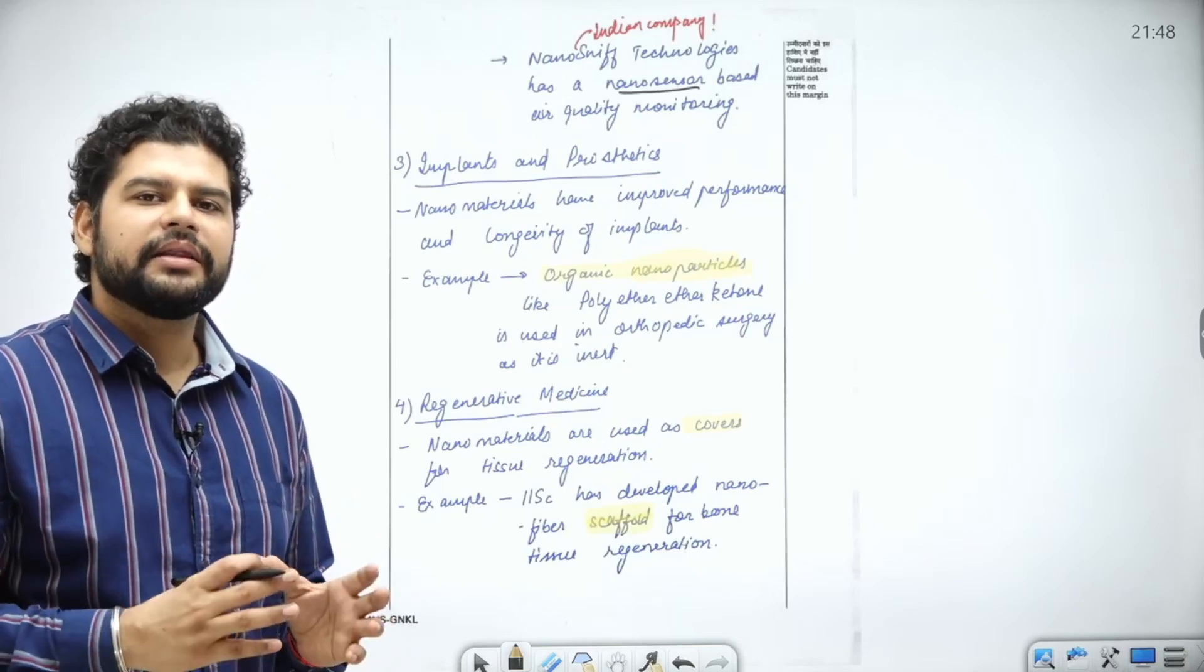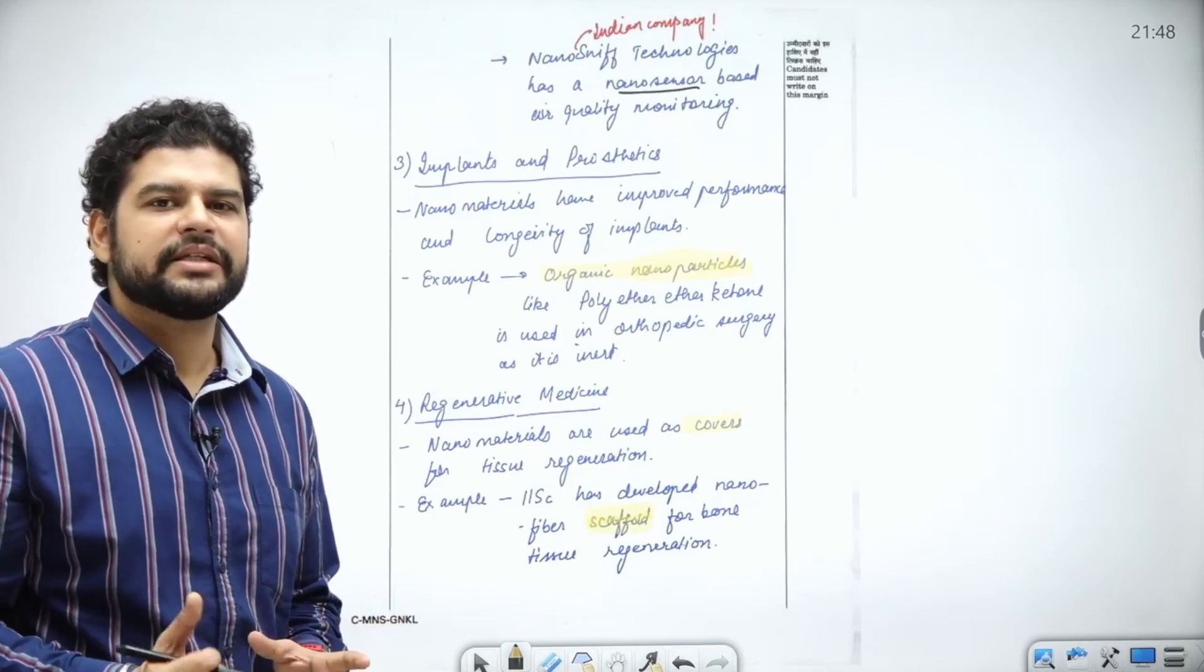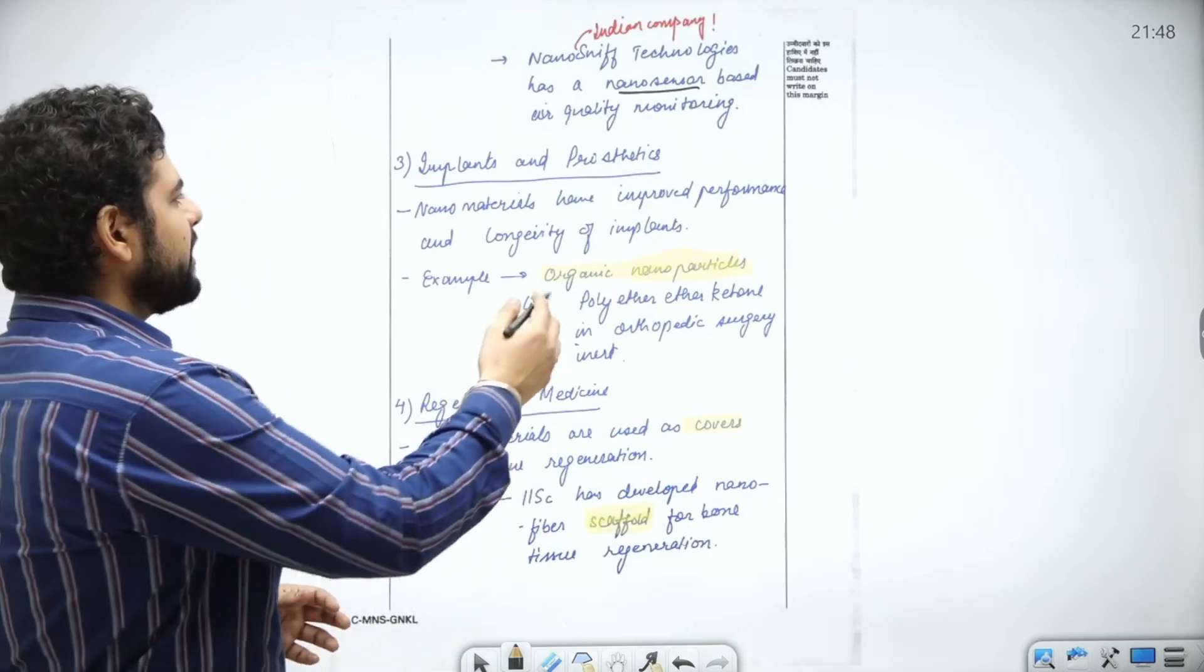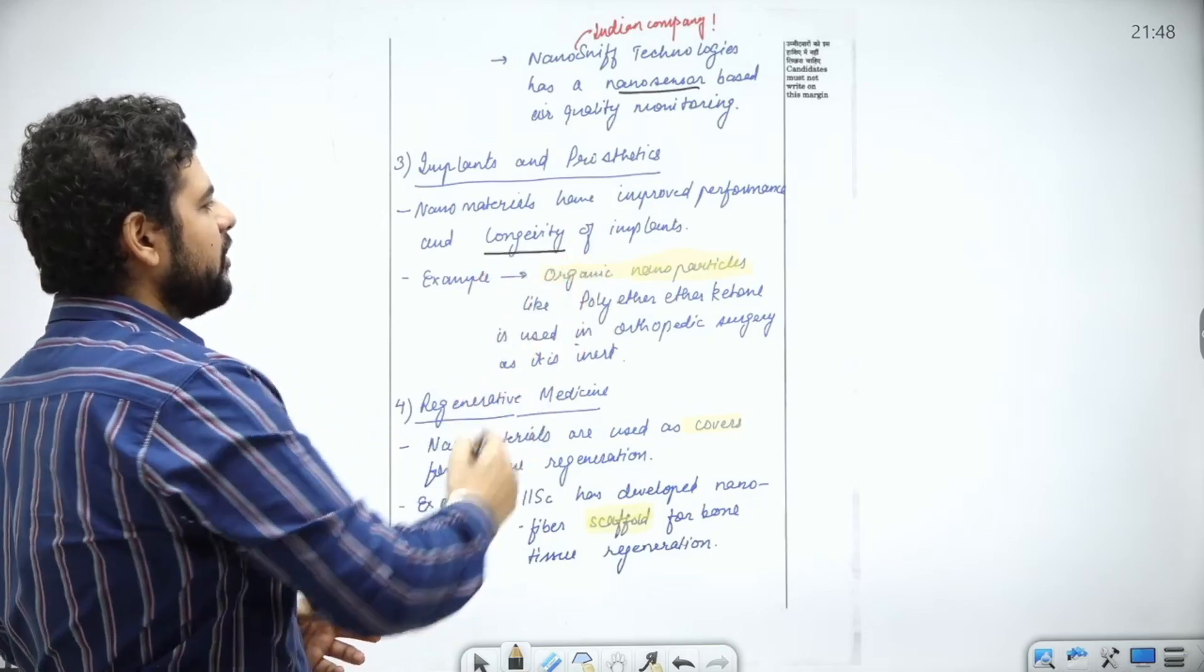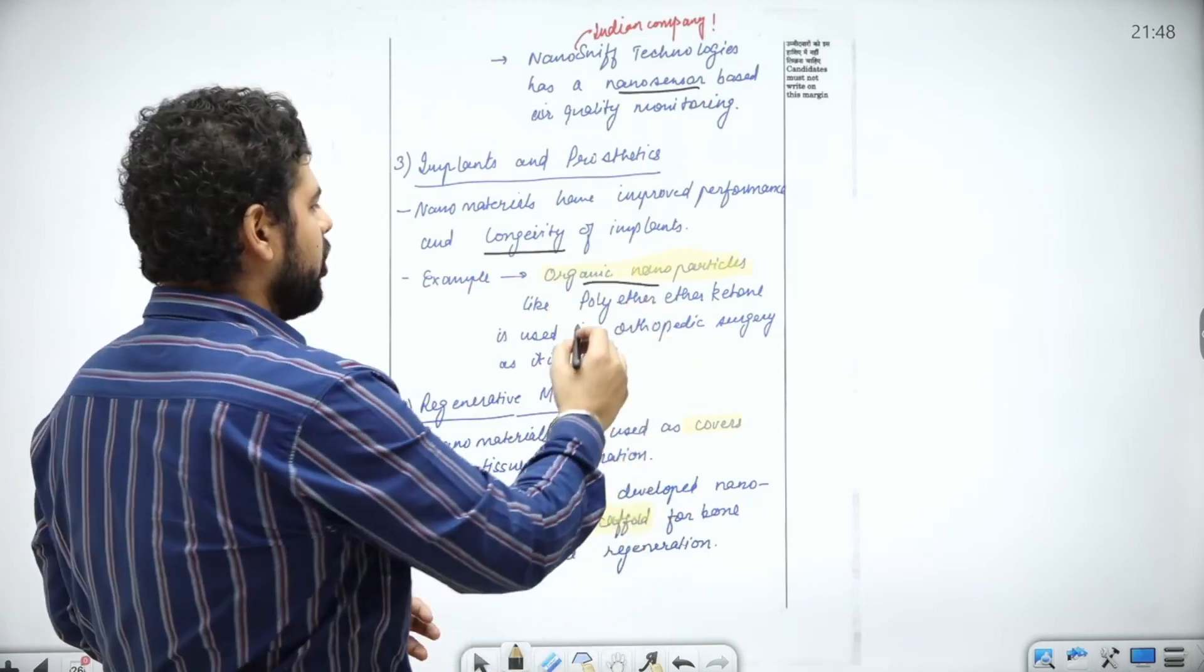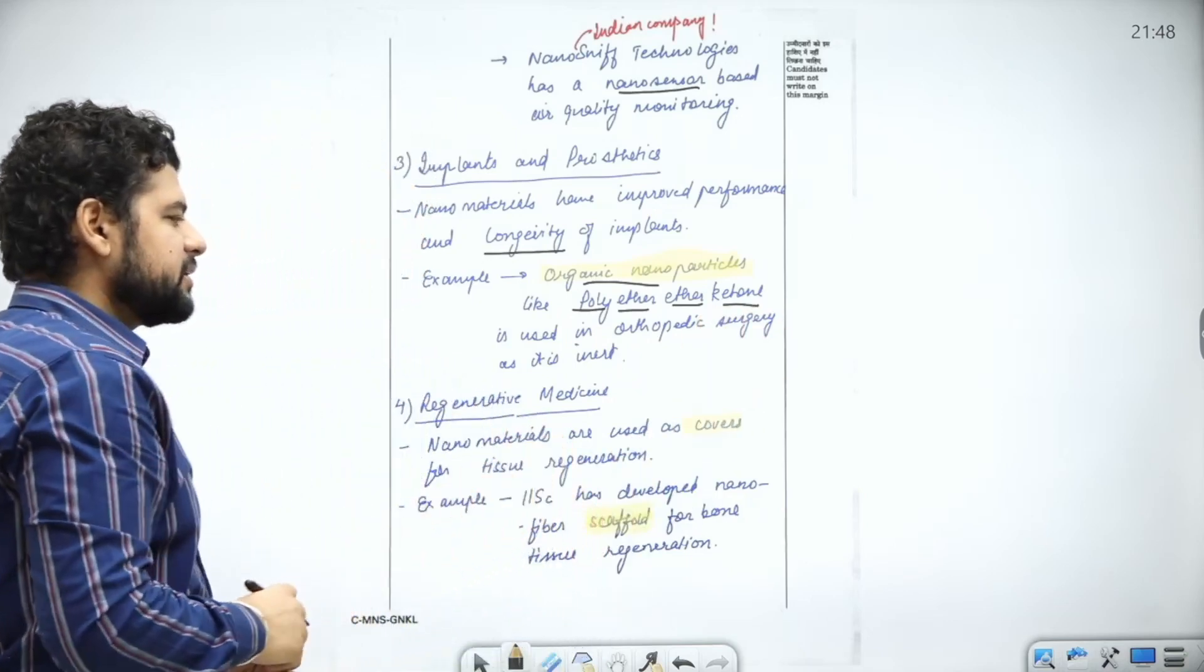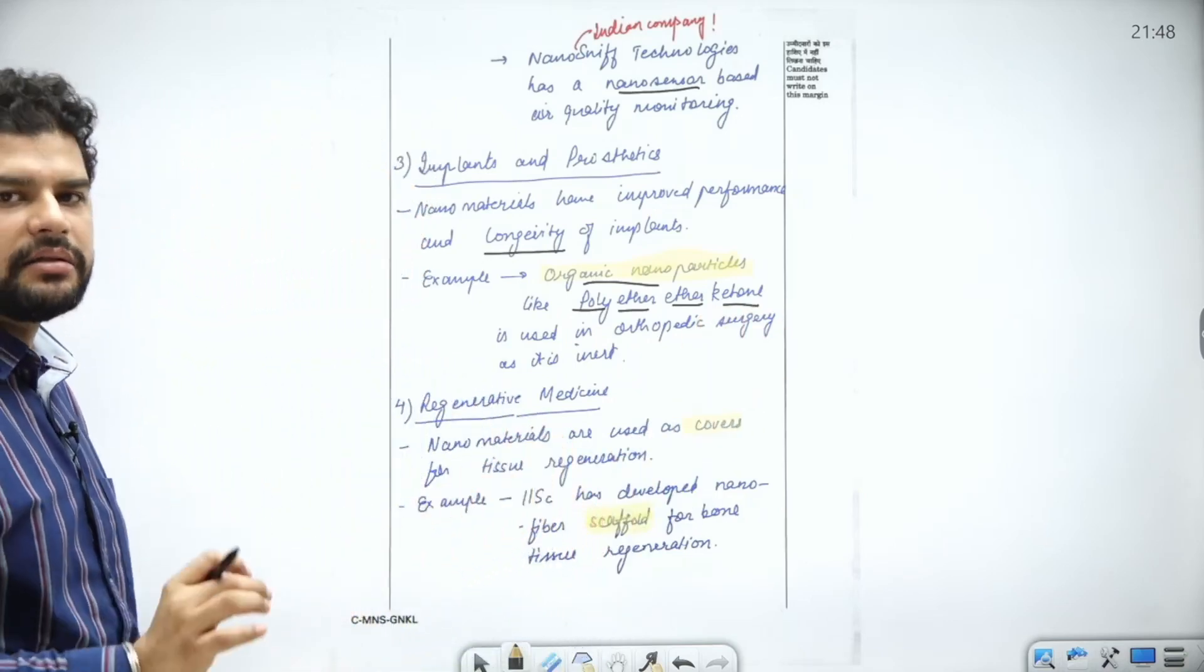It can increase the shelf life and reduce the toxicity. Nanomaterials have improved performance and longevity of implants. For example, there is an organic nanoparticle called poly ether ether ketone which is used in orthopedic surgery because it is inert and doesn't react.